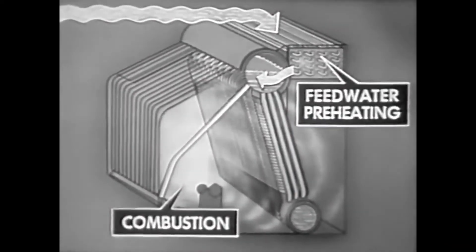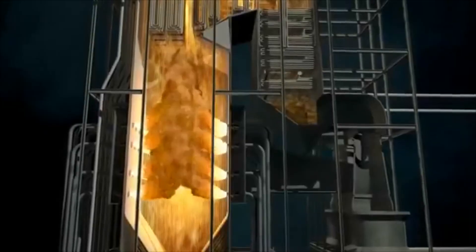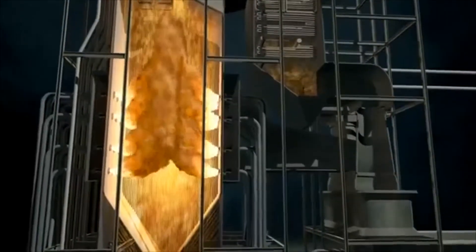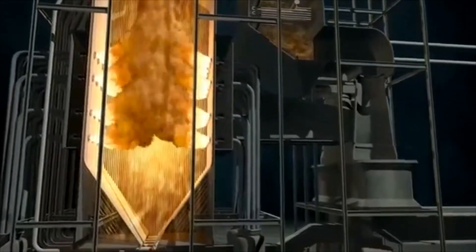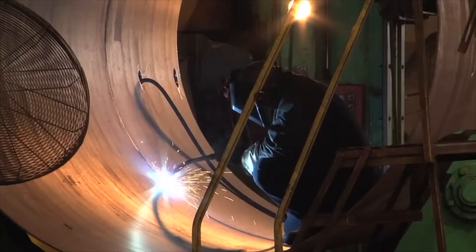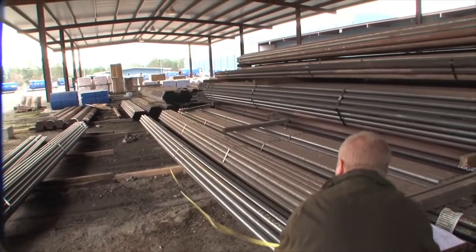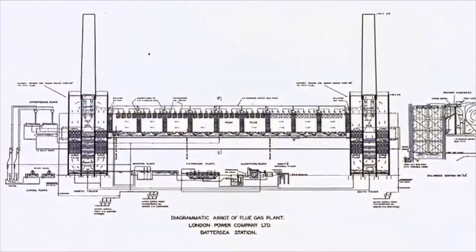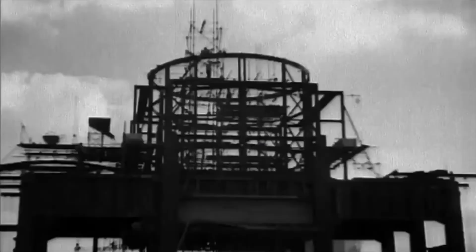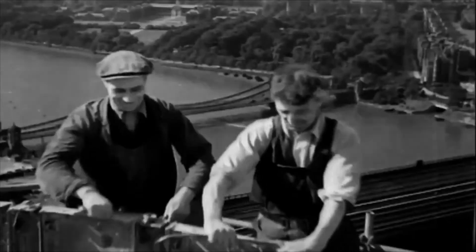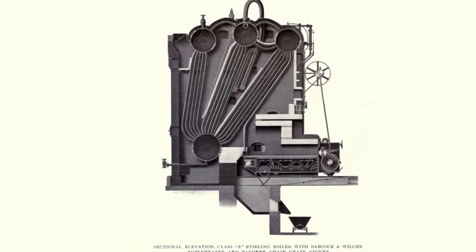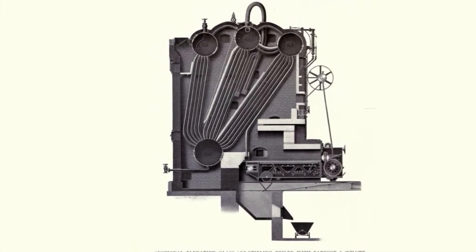In the early days of development, water tube boilers did not advance as rapidly as fire tube boilers, because they required more complex design calculations and manufacturing techniques. However, their main advantage of having almost no maximum capacity limit meant development only needed to wait for modern welding and materials technologies. After electricity was discovered, construction of steam power plants began intensively in the early 20th century, with the Stirling boiler type still dominating.